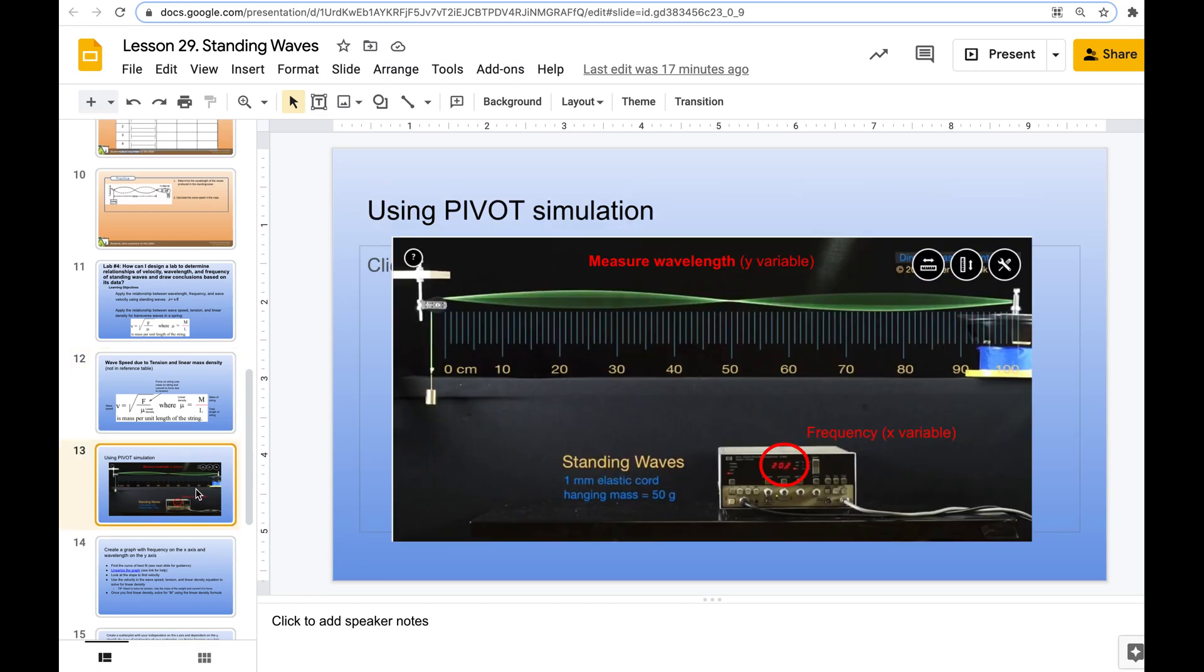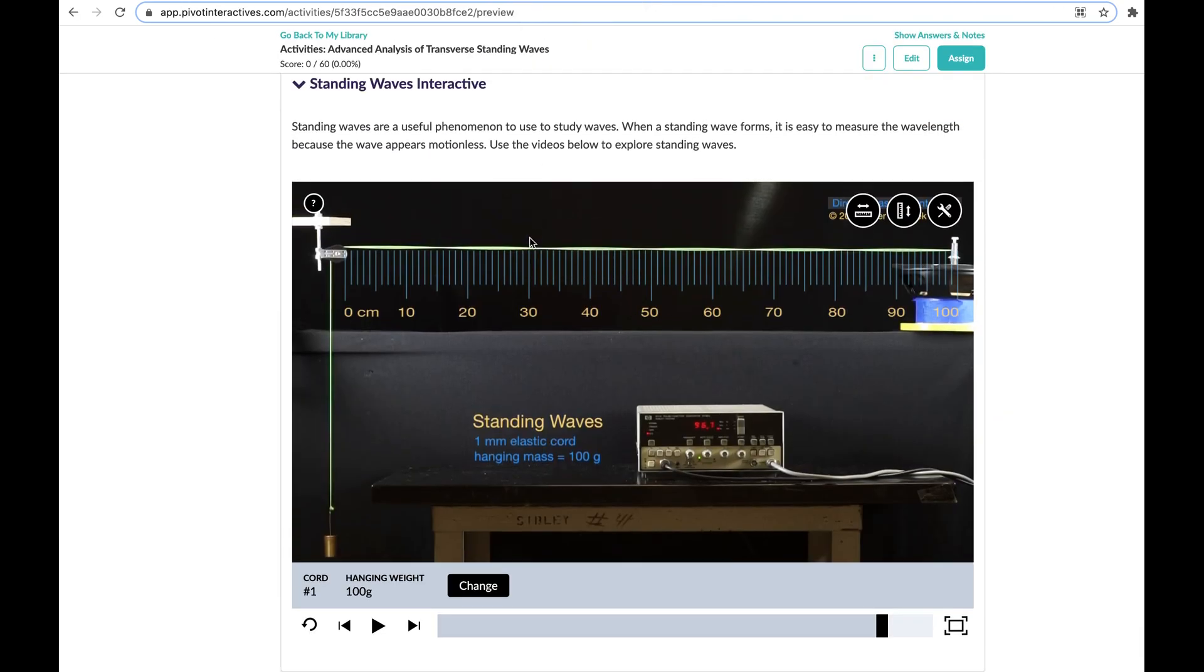This is what our PIVOT simulation looks like. We had a do now question in this Pear Deck that helped us figure that out. So we're going to have frequency, which is changing here from the wave generator. Frequency is the independent variable. So as frequency changes, we're going to see a change in the wavelength here. So frequency is our x variable because it's independent, and wavelength is our y variable because it is the dependent variable.